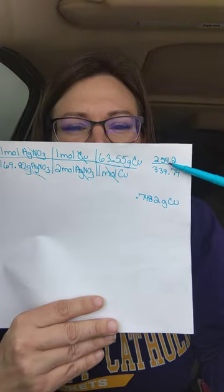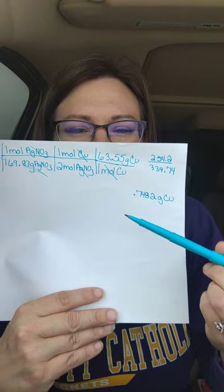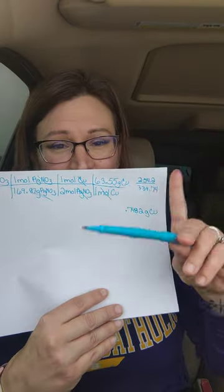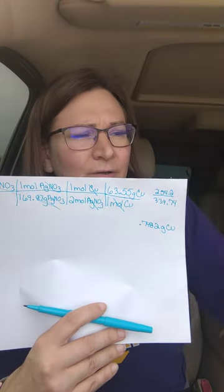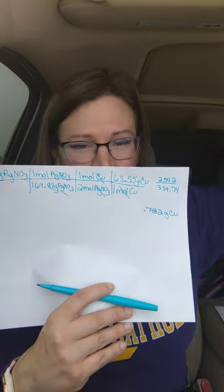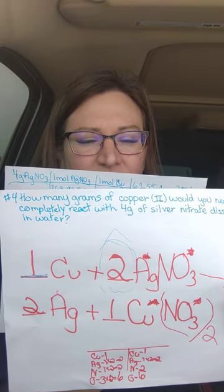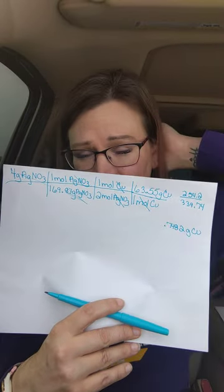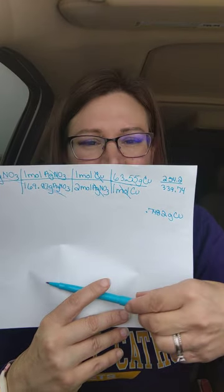So we did the math — multiplied across the top, multiplied across the bottom, divided the top by the bottom, and we get 0.7482 grams of copper. Before we think that we're done, we need to go back to the problem to check whether we're solving for a reactant or a product. When we read it: how many grams of copper would you need to completely react with silver nitrate? We're looking for a reactant, so we do not need to multiply by the efficiency yield. That would be the answer.